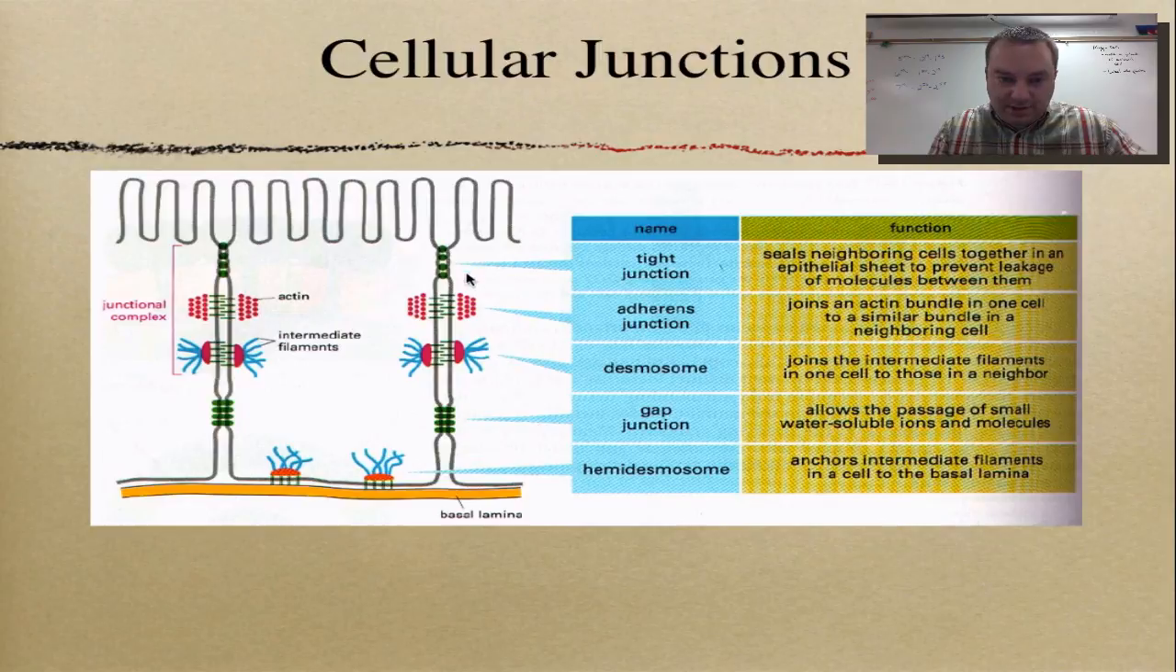So cell junctions come in five different flavors. The ones that kind of seal them together or tie them together are tight junctions. And really what these do, they form kind of a waterproof seal. You're not going to let molecules get between them.